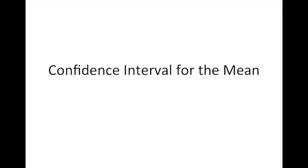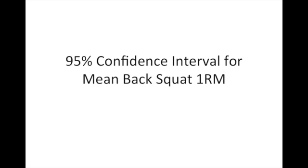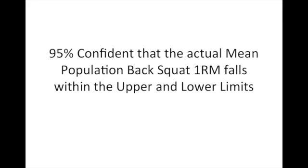Let's take the confidence interval for the mean. If we were to take a sample of international class rowers and measure the one rep max in the back squat, we could construct a 95% confidence interval for the mean in the back squat. If we were to obtain a confidence interval of, let's say, 115 to 135 kilograms, then we would be 95% confident that the actual mean value for squat performance across all international class rowers falls within that range.